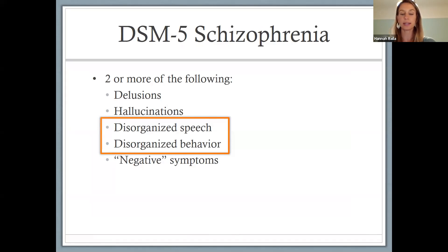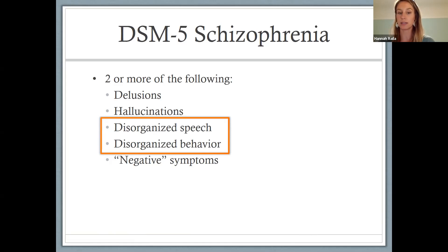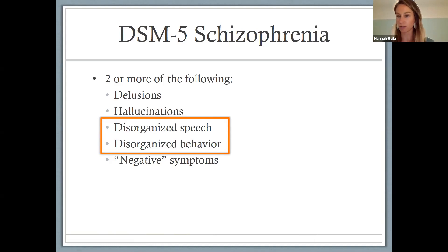The next set of symptoms are disorganized speech and behavior — acting or speaking in an erratic way. Notably, it's estimated that around 60% of the street homeless population has schizophrenia, a really high proportion. Sometimes the erratic behavior we might see in someone who appears to be street homeless could be accounted for by schizophrenia. This might look like speaking in incomplete sentences, stringing words together that don't make sense, or moving in an erratic way. Emotion that doesn't match the situation would also be an example — while telling a really sad story, someone might burst out laughing. That's a feature of disorganized behavior.